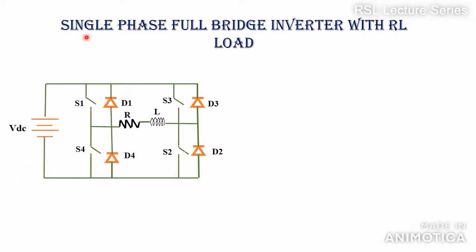In this lecture we will discuss the single phase full bridge inverter with RL load. The schematic diagram consists of four switches S1, S2, S3, and S4 and four diodes D1, D2, D3, and D4. The load is an RL load. Switches S1 and S4 are connected in series, and this combination is connected in parallel with the supply voltage VDC. Similarly, S2 and S3 are connected in series, also in parallel with VDC.